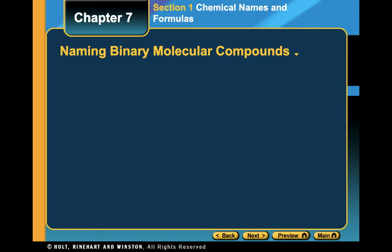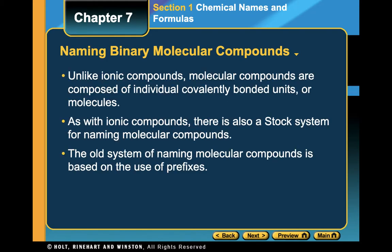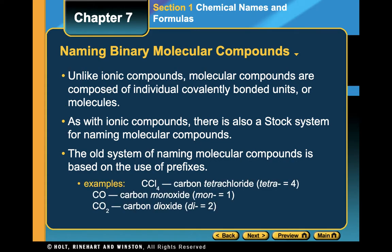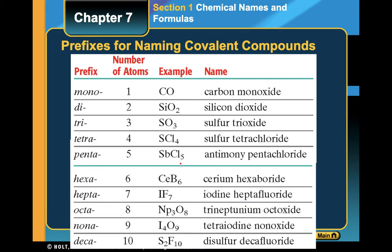Molecular compounds are compounds which use covalent bonding. There is a stock system of naming them where we do use roman numerals, but we're not going to be talking about that today. Today we are just going to be talking about the old-fashioned way of naming covalent compounds or molecular compounds, and this is actually very simple. The first thing you need to understand is we need to use prefixes — a prefix is something that comes before a word that indicates what that word might mean.